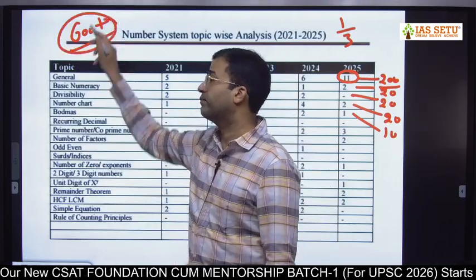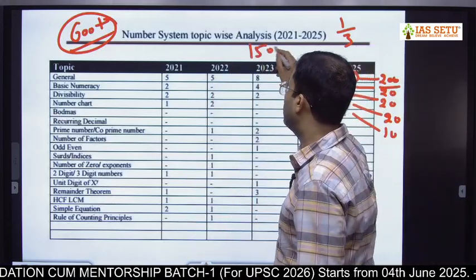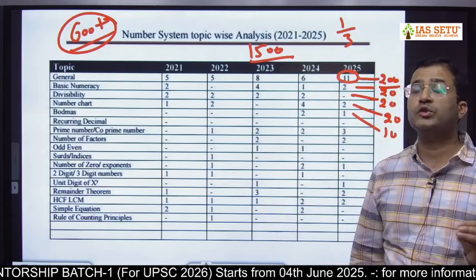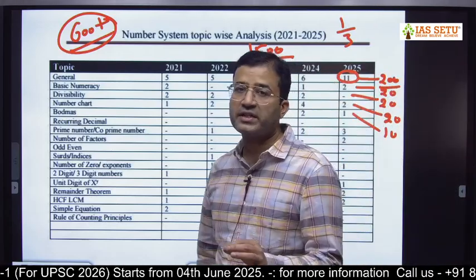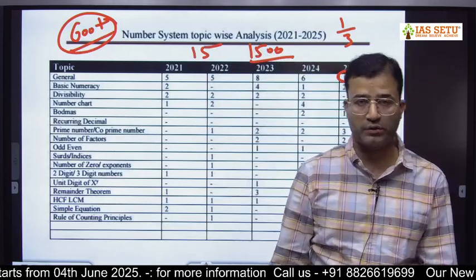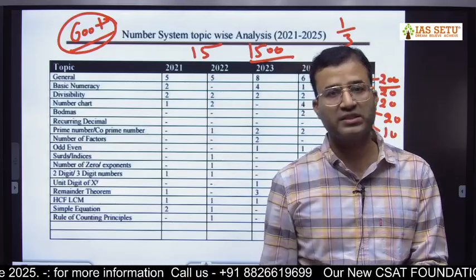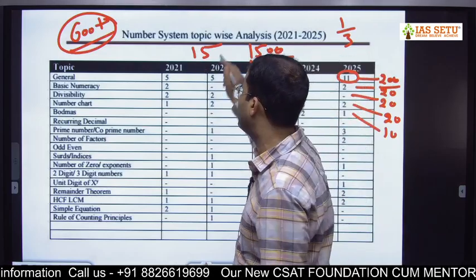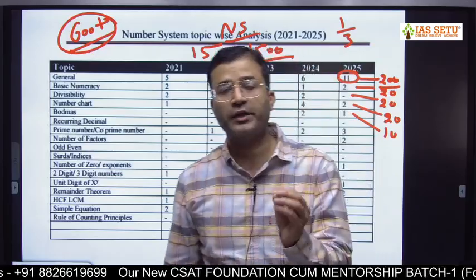This time I will provide you 600-plus questions for your practice. We will provide a total of 1500 questions on the latest pattern, out of which 600-plus will be on number system. And one more thing — this time on number system I will take a total of 15 classes, or maybe more, including theme-based lectures. Previously I used to take only two classes on number system, but now I am going to take around 15 classes because number system is the darling topic of UPSA.